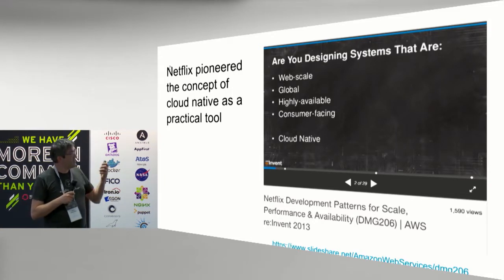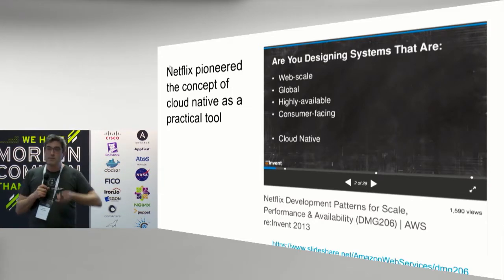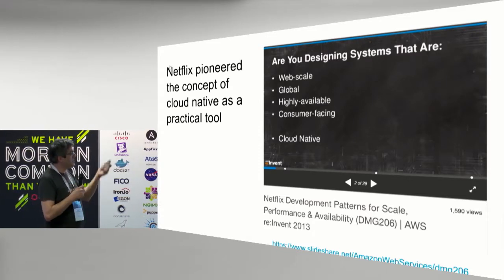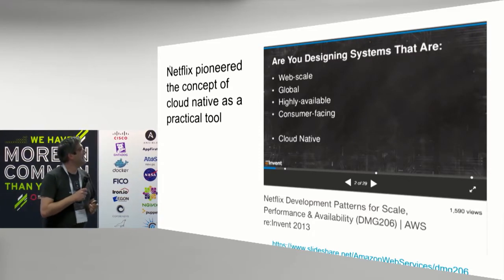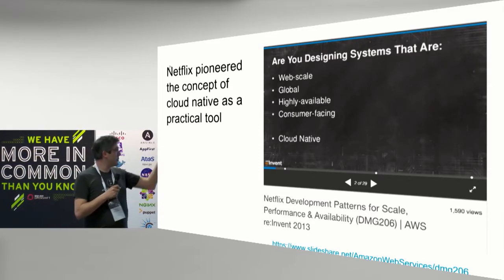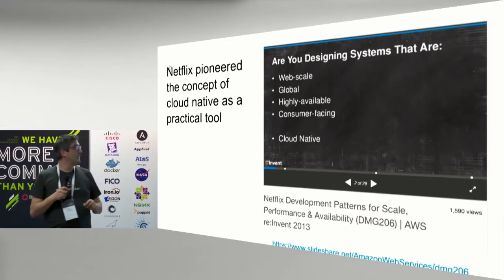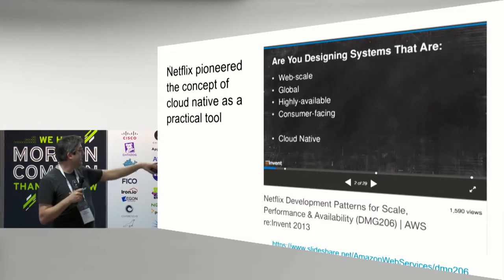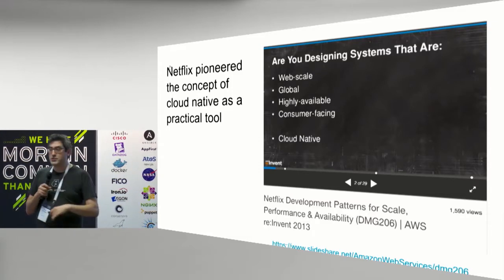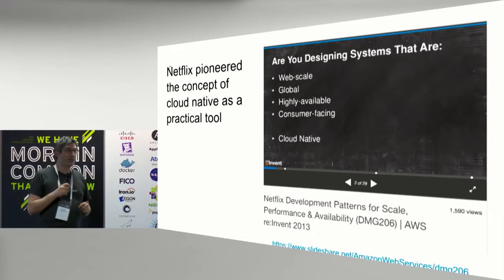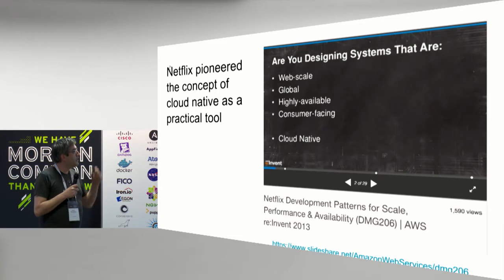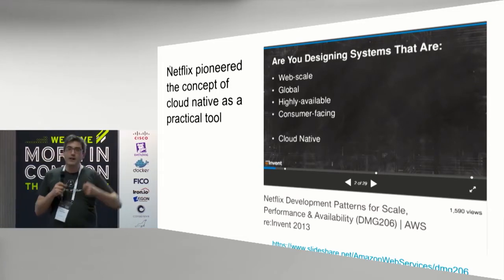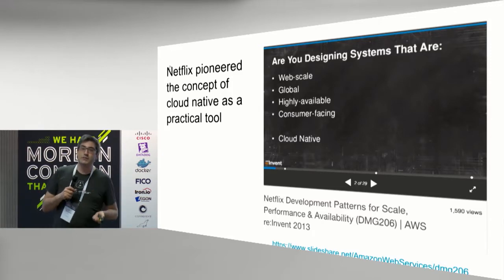So the technology team tasked with meeting this obvious business requirement wrote down these criteria, which they subsequently talked about. These slides are from a much later AWS re:Invent conference — there's a link, I recommend you look at them. The requirements were web-scale, global, highly available, and consumer-facing. And they called it, just for short, Cloud Native.